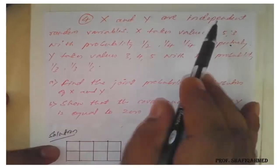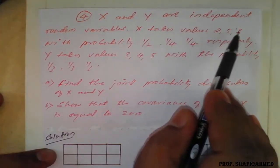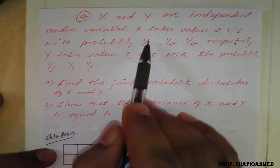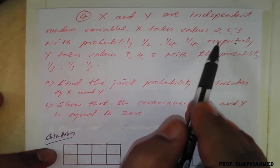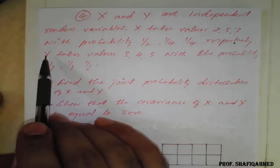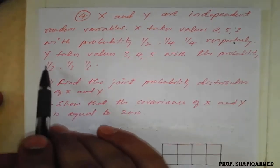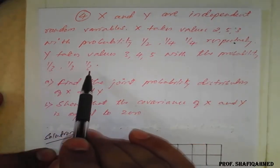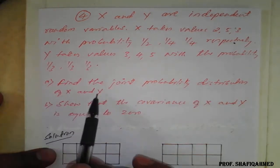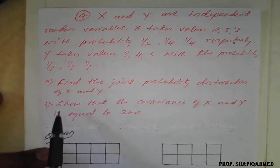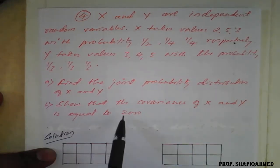The question is: X and Y are independent random variables. X takes the values 2, 5, 3 with probability 1/2, 1/4, 1/4 respectively. Y takes the values 3, 4, 5 with probability 1/3, 1/3, 1/3. We need to find the joint probability distribution of X and Y — that is, construct a table. The second part is to show that the covariance of X and Y is equal to 0.